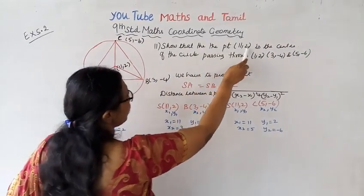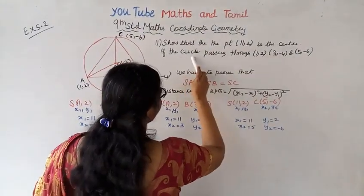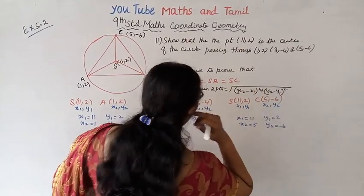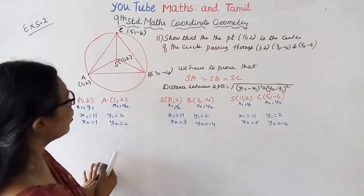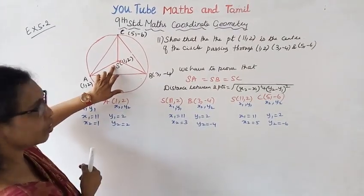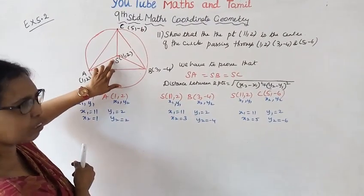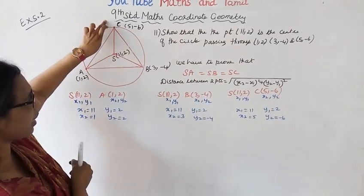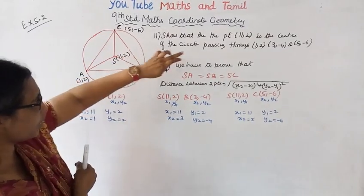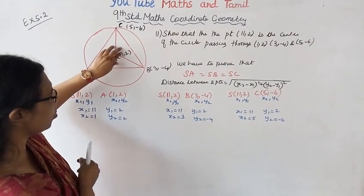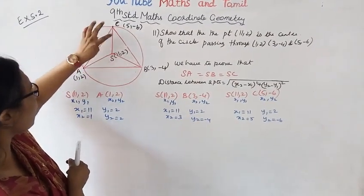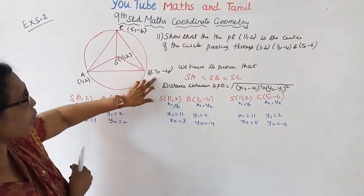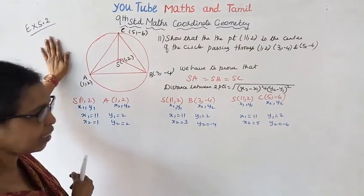Show that the point (11, 2) is the center of the circle passing through the points (1, 2), (3, -4), and (5, -6). We need to prove this.